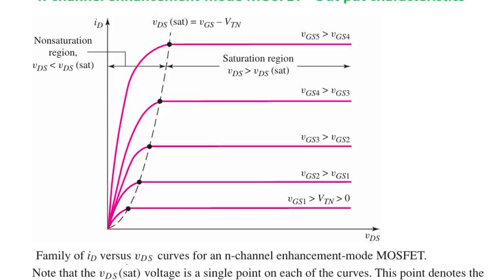In a MOSFET, the gate voltage creates an electric field that allows current to flow from drain to source. Since the gate is insulated, almost no current flows into it, except for charging and discharging capacitance. This makes MOSFETs much faster and more efficient for switching applications.